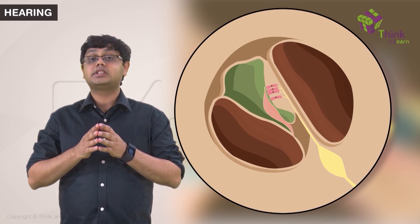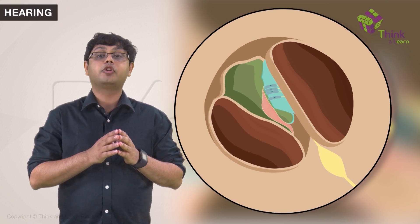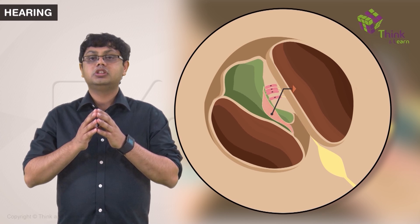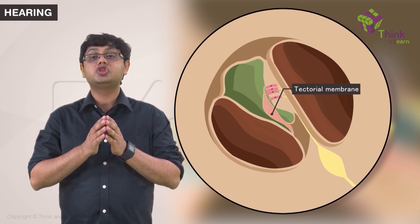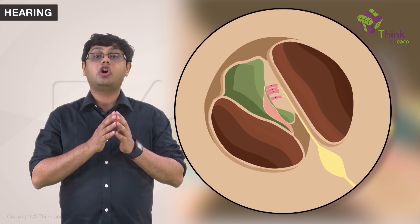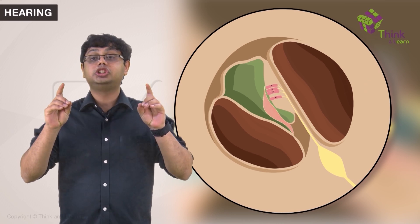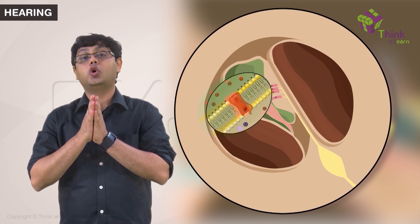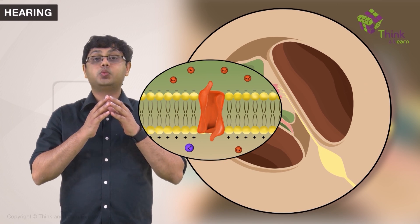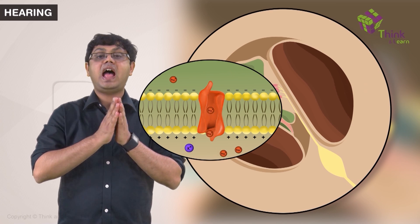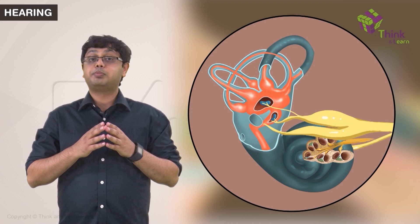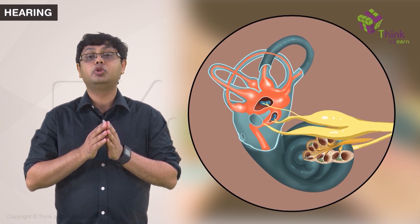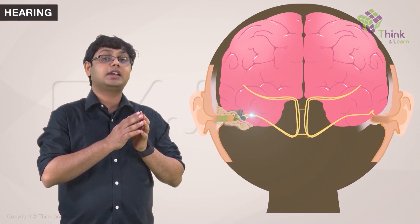Now, as the basilar membrane is displaced, the organ of Corti also moves up and down. The tectorial membrane is attached by a hinge-like mechanism, and as a result, it also moves up and down. The opposing shearing forces of movement of the basilar membrane and the tectorial membrane make the membrane rub the hair cells in an opposing direction. This bends the stereocilia and causes opening of certain ion channels. There is once again a change in potential difference and a generation of action potential. This potential then travels through the branches of the vestibulocochlear nerve that innervates that hair cell.